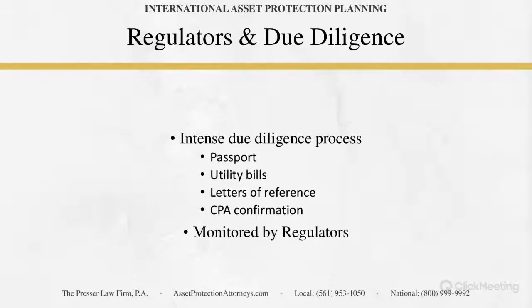The entity is monitored by the regulators — they come in and check the files of the trustee and the LLC manager. They need updated passports and updated due diligence every once in a while. You need to make sure that if you're creating one of these entities that you have all of these things available, because we often run into situations where a protector doesn't have a utility bill in their own name or didn't have a passport. There's a lot of planning involved, and this is all in addition to the actual creation of the LLC operating agreement or trust agreement.